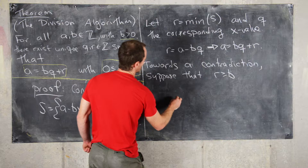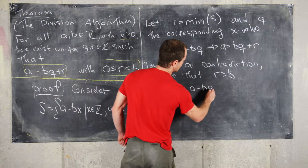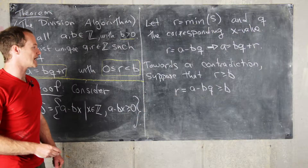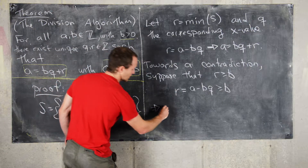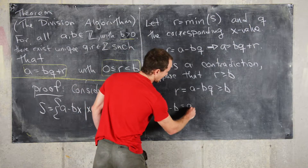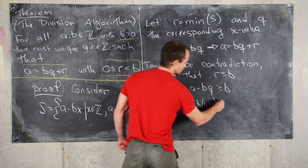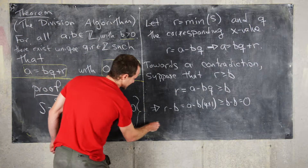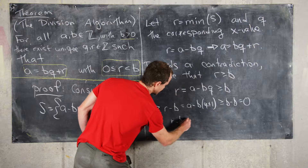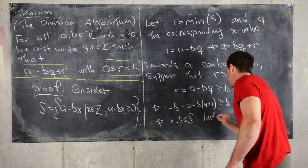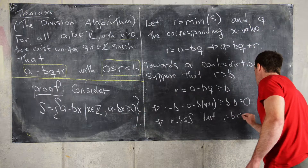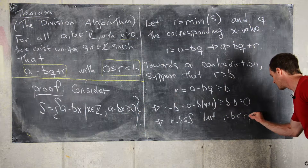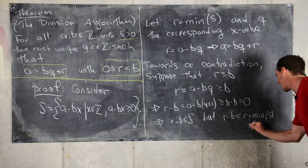If R is greater than or equal to B, then R equals A minus BQ is greater than or equal to B. Subtracting B from both sides gives R minus B equals A minus B times (Q plus 1), which is greater than or equal to zero. So R minus B is an element of S, but R minus B is less than R — we have found an element of S smaller than the minimum, which is a contradiction.